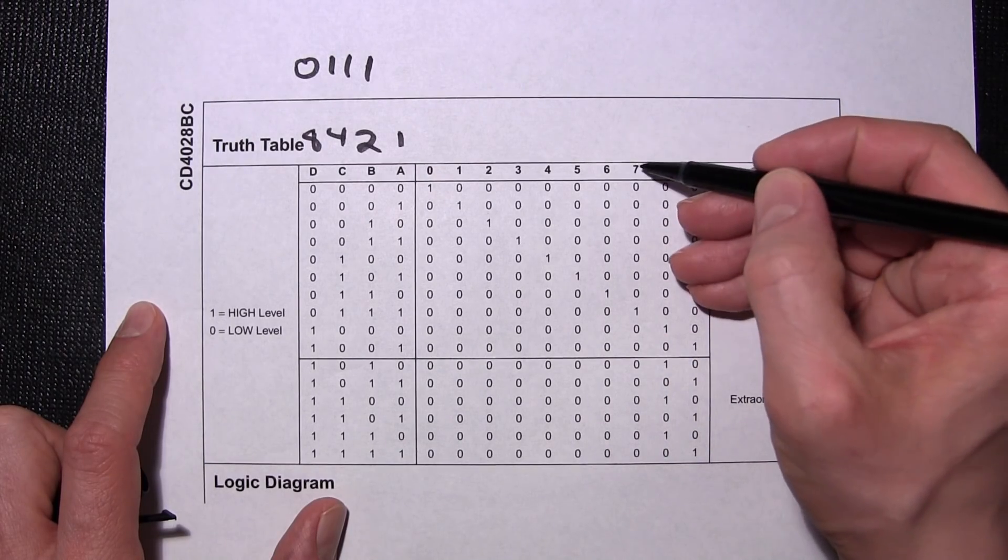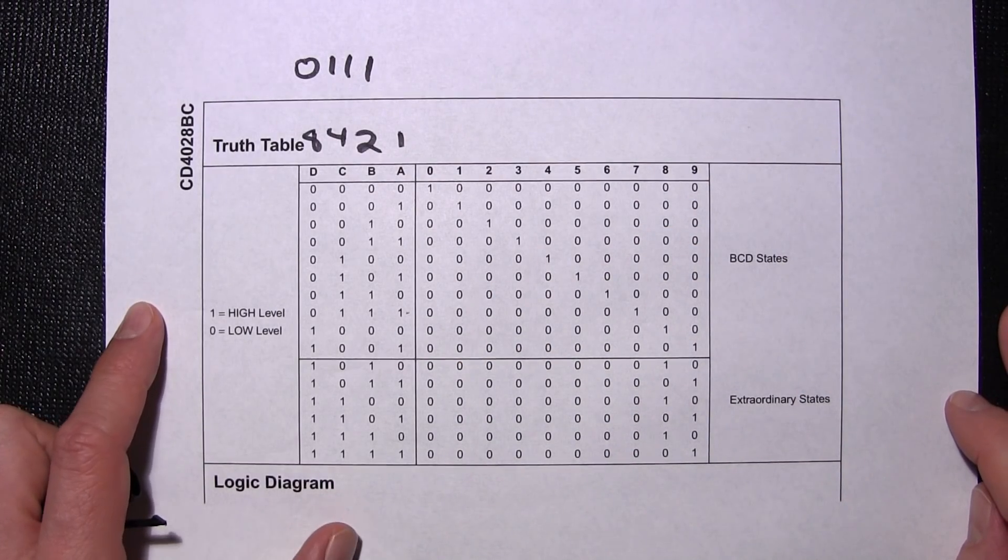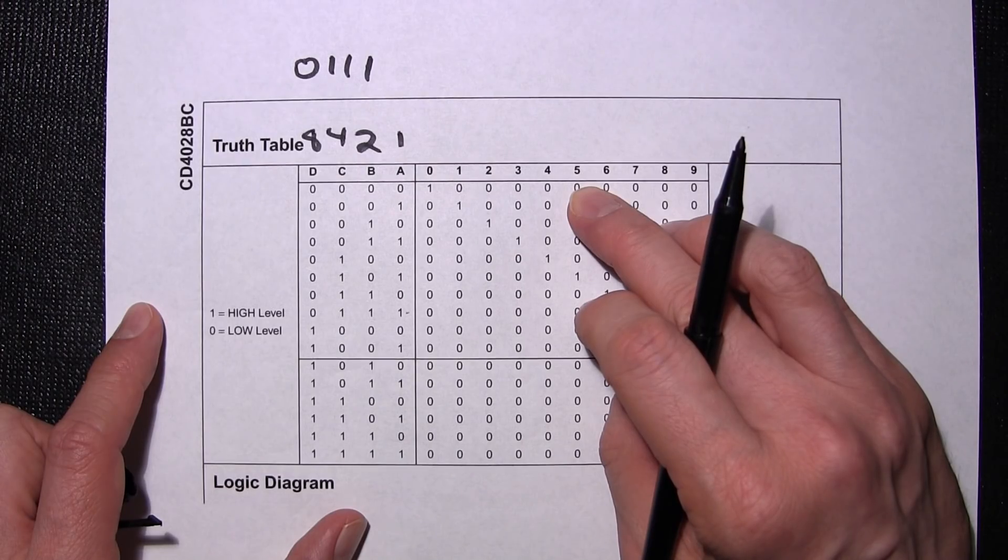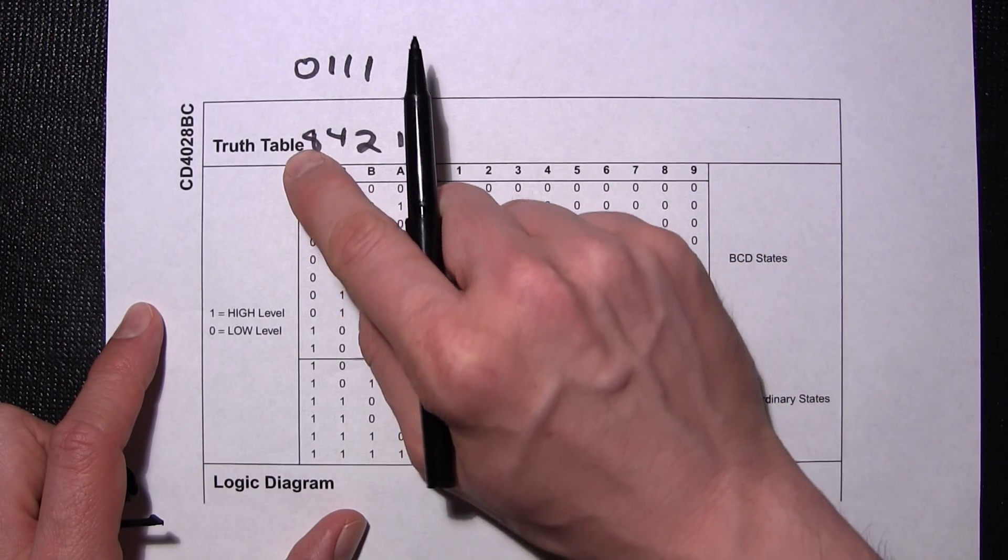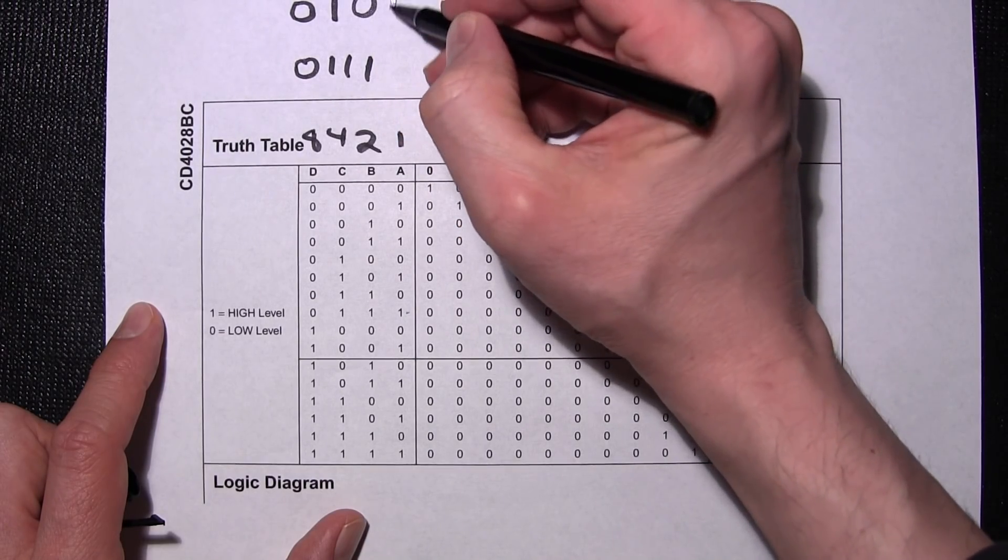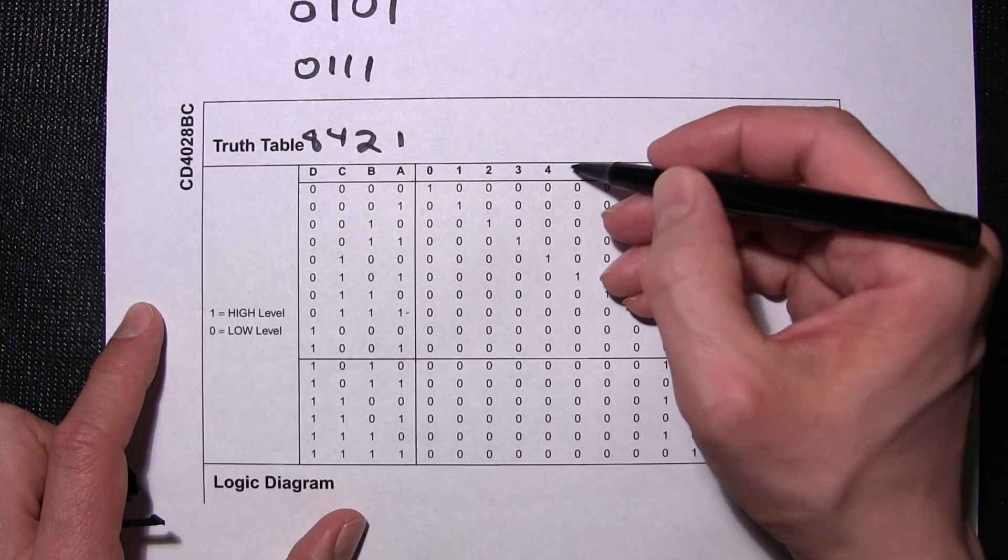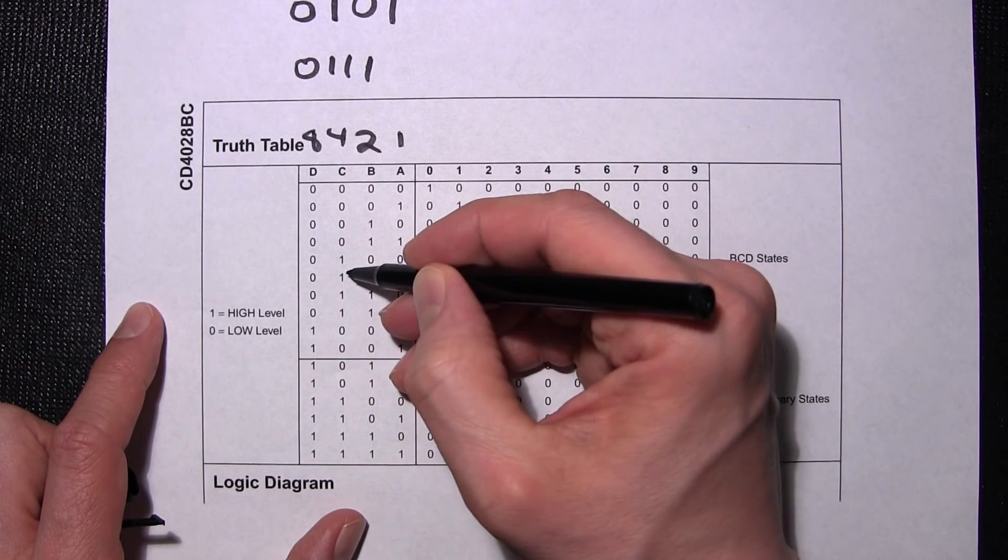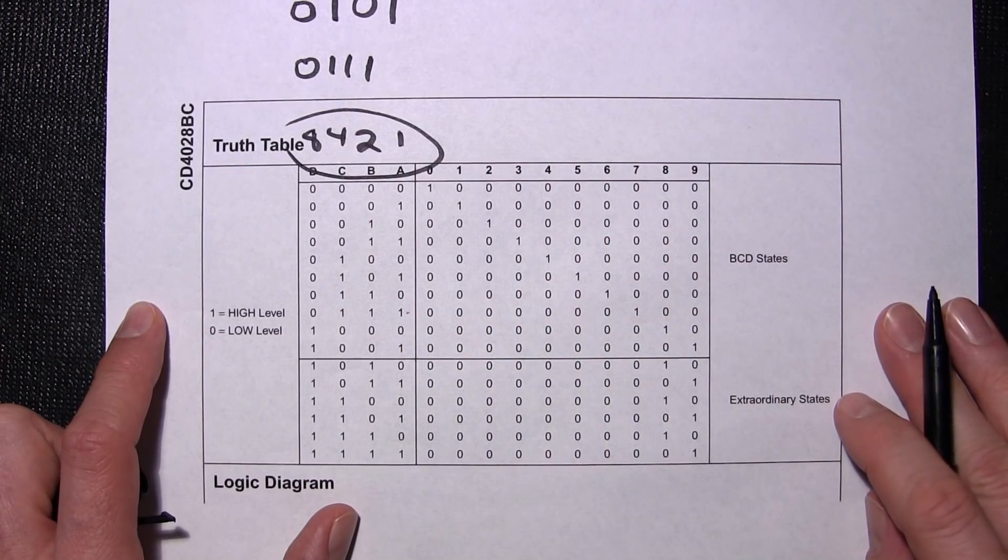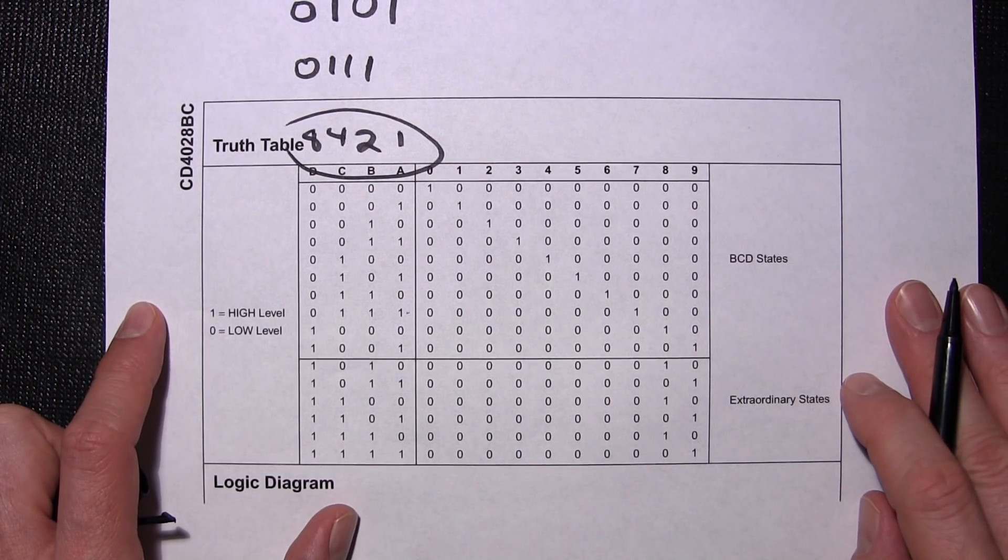So we take a look at the number 7, 0, 1, 1, 1. So just say we wanted to light up the number 5. So we would need to have 0, 1, 0, 1. Because 4 plus 1 is 5, and you leave the other two at ground. So we take a look at number 5, 0, 1, 0, 1. This is absolutely crucial to have on this list, but they don't put it there. I guess they just expect people to know this.